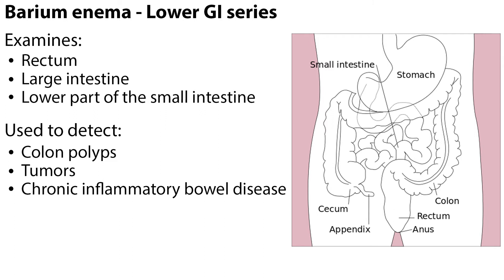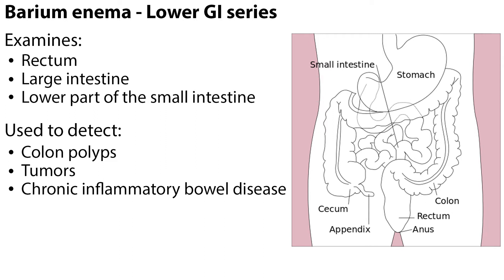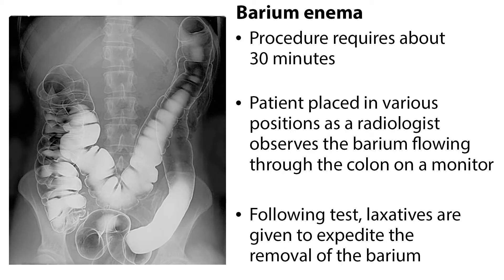A lower GI series, or barium enema, is done to examine the rectum, large intestine, and the lower part of the small intestine. It is used to detect colon polyps, tumors, and chronic inflammatory bowel disease. Prior to the procedure, the patient must cleanse the bowel with laxatives and/or enemas. They may also need to follow a liquid diet for 24 hours before the test, and then remain NPO for 8 hours before the test. The procedure requires about 30 minutes while the patient is placed in various positions as a radiologist observes the barium flowing through the colon on a monitor. Following the test, laxatives are given to expedite the removal of the barium.